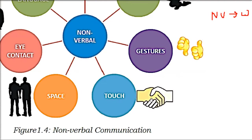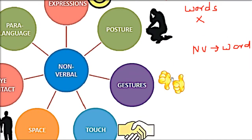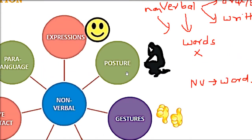Touch — if you shake someone's hand firmly, it means confidence; you are greeting firmly. Otherwise it shows you are disinterested. Gestures — if you show your thumb up, one way shows it's good, the other shows not good.